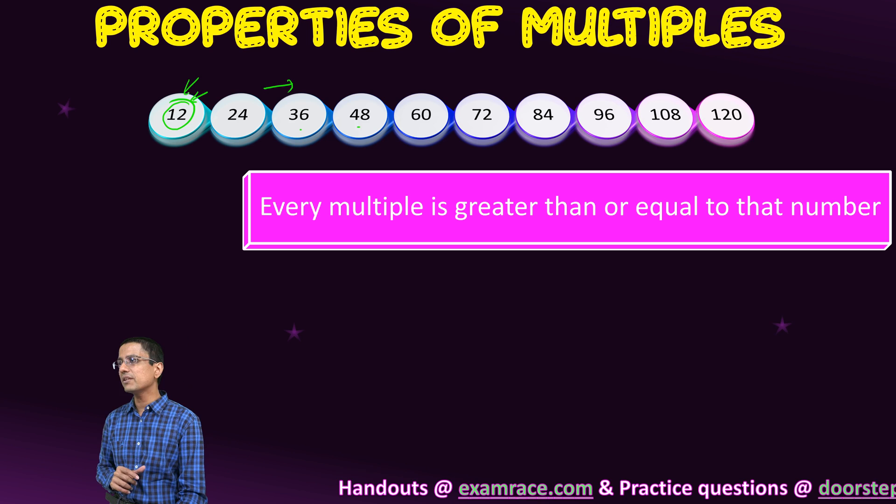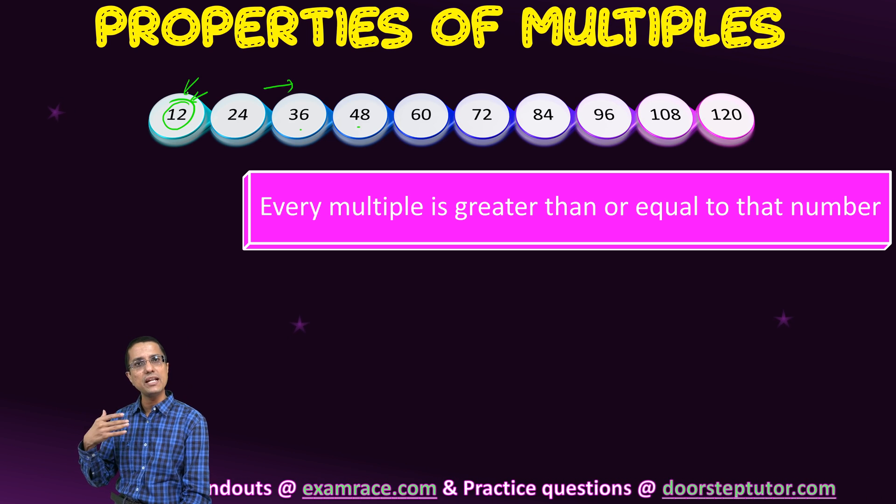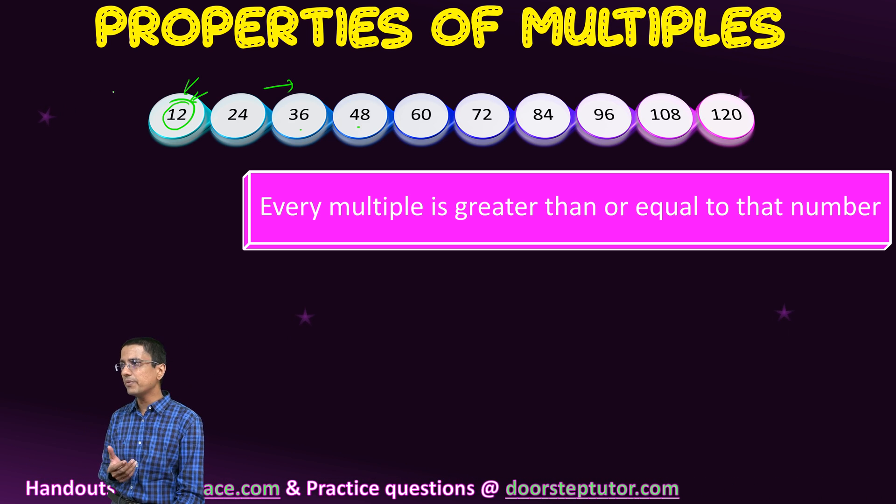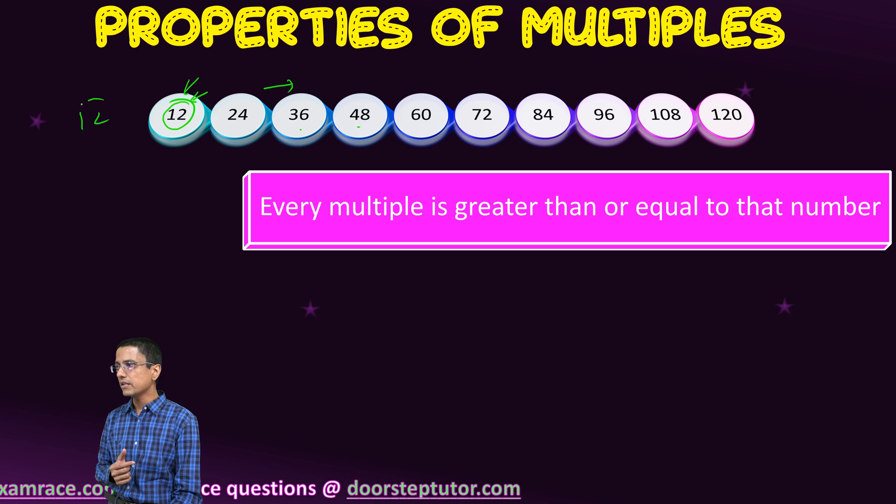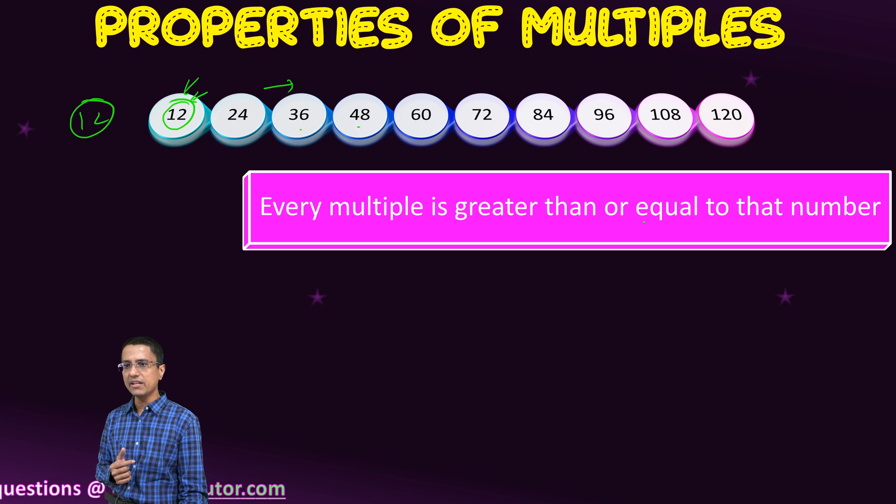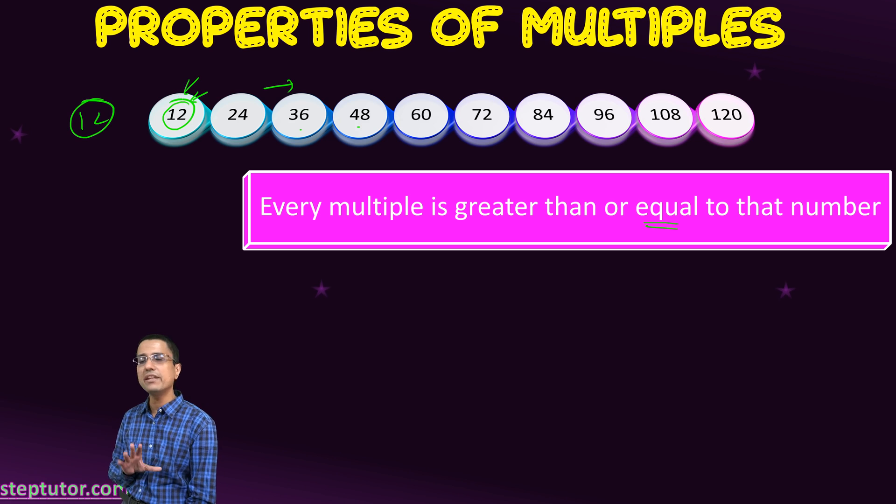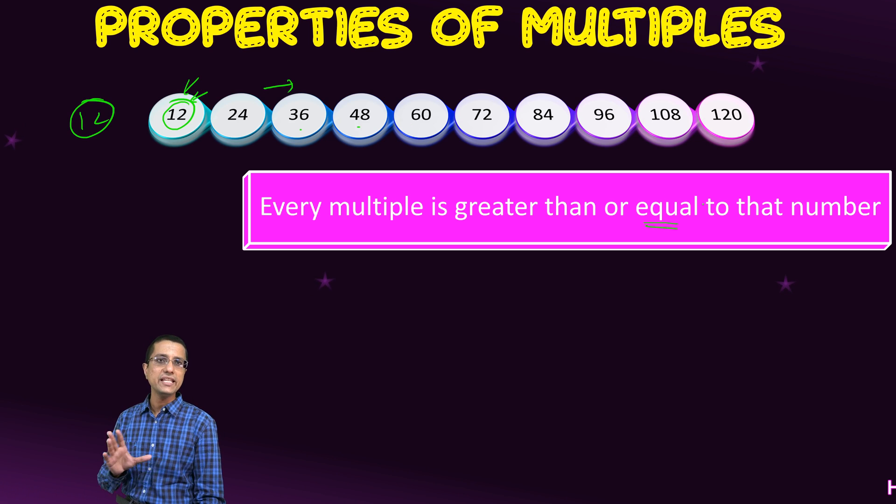Of course, the very first number 12 is multiplied by 12 into 1. So that would be the number itself. So for that, we bring in the equal to sign. To take into account the very first case, 12 into 1, we bring in the equal to sign.